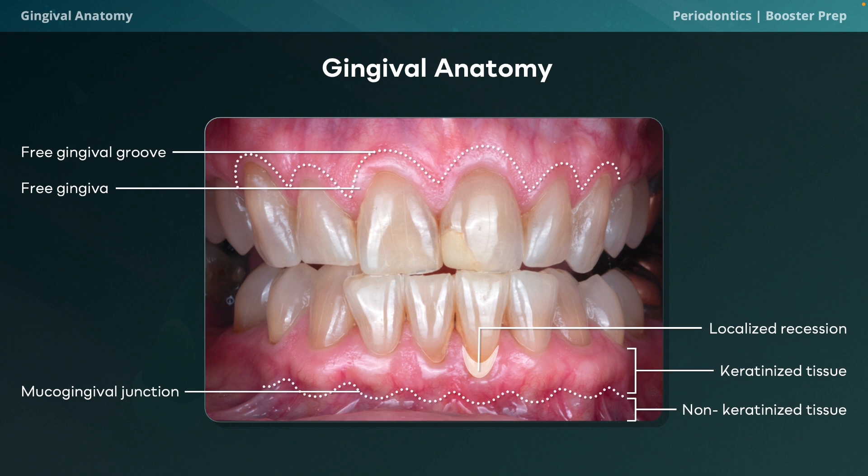In a diseased state the gingiva can be recessed; localized recession to one tooth can be caused by intraoral piercings. Between the free gingival groove and the mucogingival junction lies the attached gingiva — the portion of keratinized gingiva firmly bound to the underlying alveolar bone. It plays an important role in withstanding mechanical forces of chewing and tooth brushing, providing stability to the gingival margin. Adequate width of attached gingiva is important for maintaining periodontal health, especially around restorations and implants.